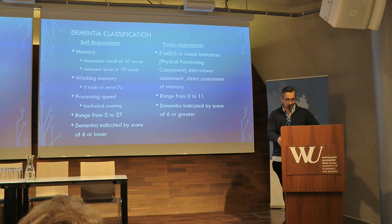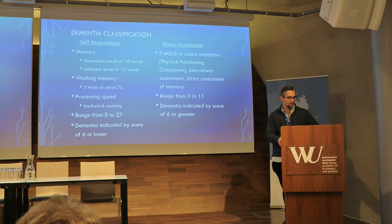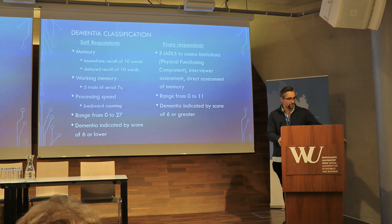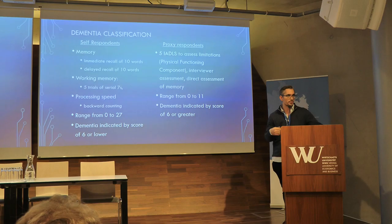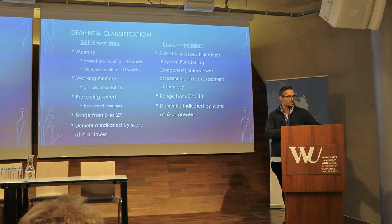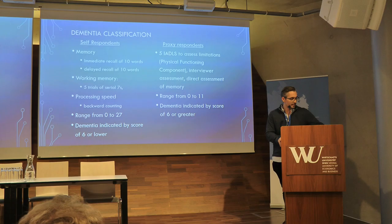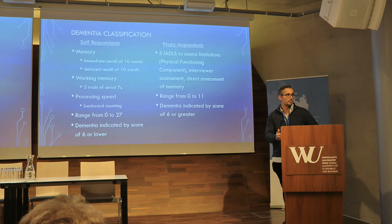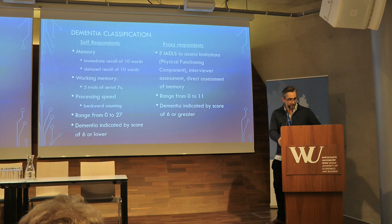For dementia classification, we're pulling from the 2011 Alzheimer's dementia-related criteria. These aren't perfect measures but get much closer. The approach is more functional than biological. For self-respondents, there are three primary components: memory, which includes immediate recall of 10 words and delayed recall of 10 words; working memory, which is the serial 7s trial counting back from 100 by 7; and processing speed, counting backwards. That gives a range of 0 to 27, and dementia is indicated by a score of 6 or lower, meaning these individuals are performing very poorly on this cognitive battery.